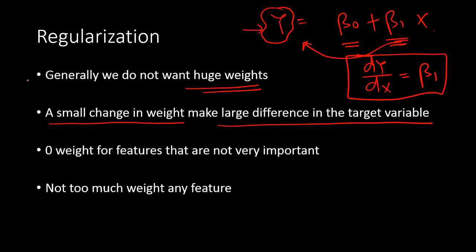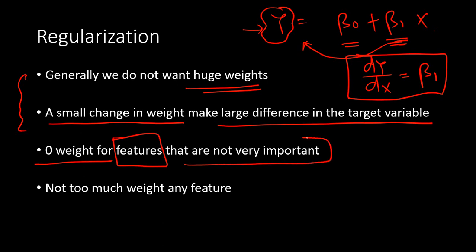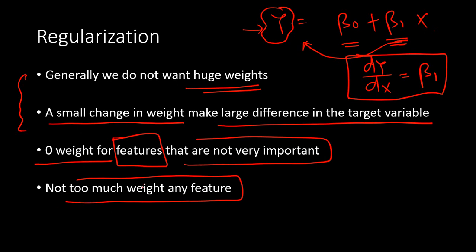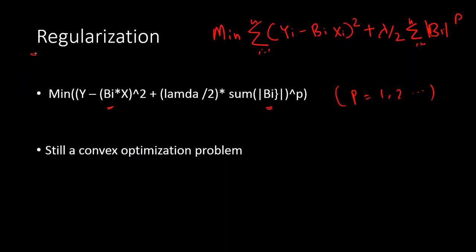Given this intuition, we understand why we do not want higher weights. Regularization essentially puts zero weights on features that are not very important, and ensures no single feature gets an extremely high weight. The two important things are: smaller weights overall, and zero weight for unimportant features. As a result of this, we are able to overcome the problem of overfitting.